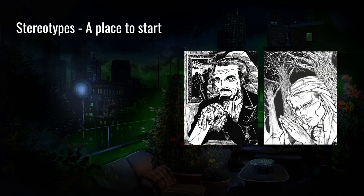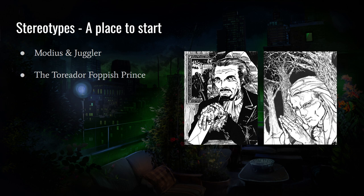Let's go to stereotypes — a place to start when creating vampires. Modius and Juggler: the Toreador Prince and the Bruja Anarch. You have the foppish, self-absorbed, neurotic Toreador Prince — a classical stereotype — and the ringleader Bruja Anarch who's down with the kids, very chill, easy to get along with, and kind of manipulative. The Toreador Prince is a powerful vampire but hindered by his neurosis and sense of inferiority to Loden.